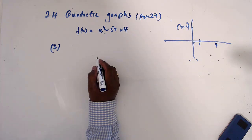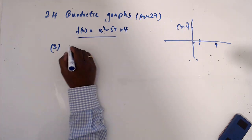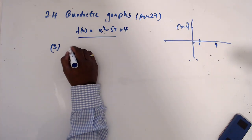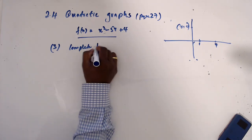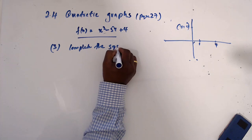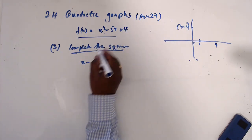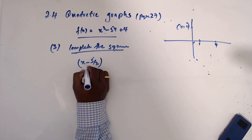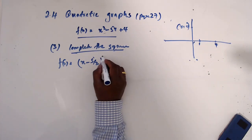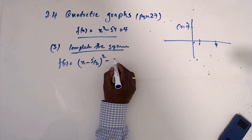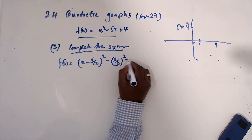Now step 3, we need to find the turning point. So we're completing the square. So we know that f(x) equals (x minus 5/2) squared minus (5/2) squared plus 4.